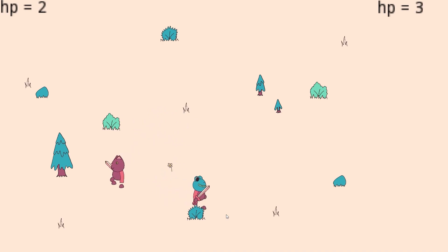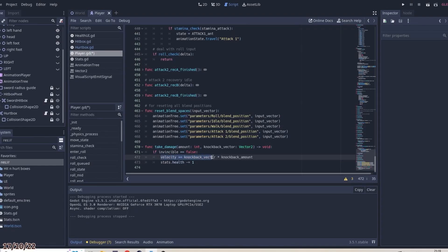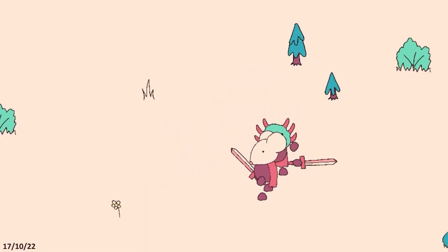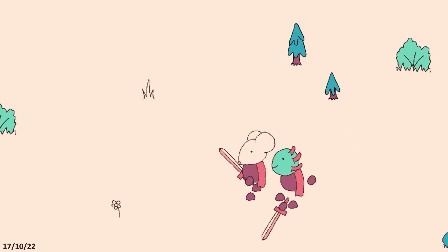A problem I've noticed is that it's not particularly apparent when you land a hit on someone, so I added some knockback to the player when they get hit. It's still not super clear, but hopefully some sound effects, blood, and maybe a bit of screen shake will help further down the line.